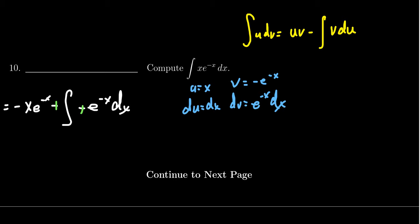And so our final answer would then be negative xe^(-x). We're then going to negative e^(-x). And perhaps the most important part here is remember the plus C, right?